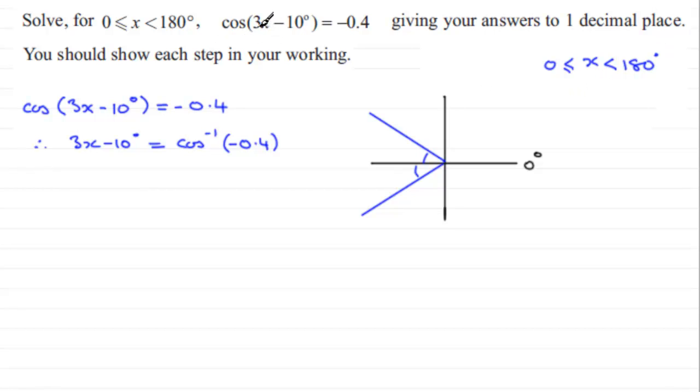We build it up by first of all working out what 3x would be, times in each of these three values by 3. So if we do that, we're therefore going to have 3 times 0 which is still 0, x times 3 is 3x, and 3 times 180 is 540 degrees.